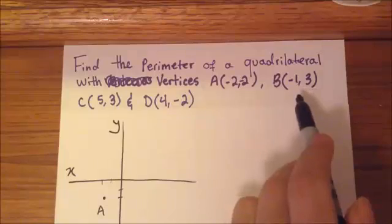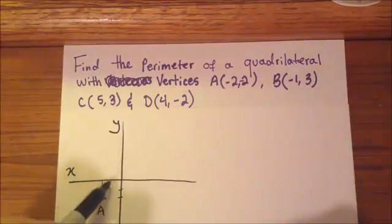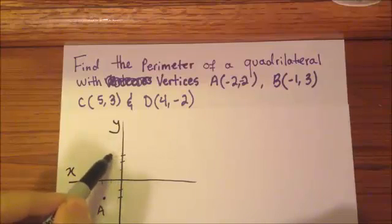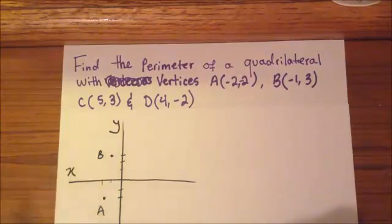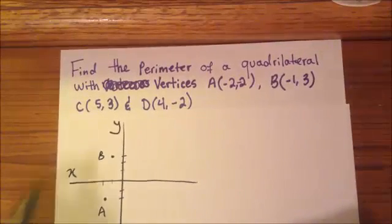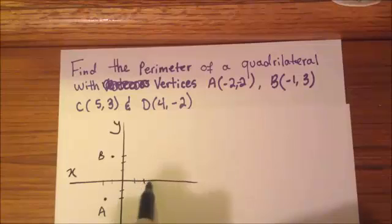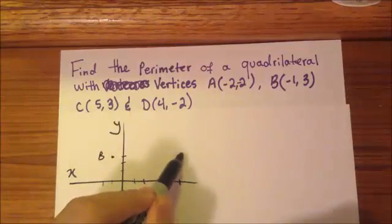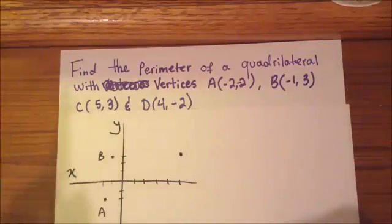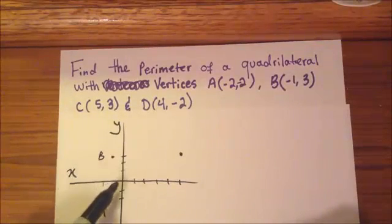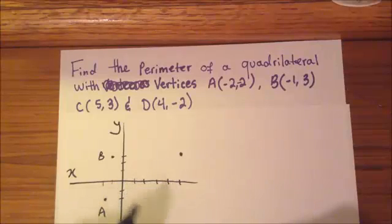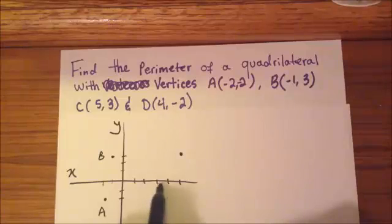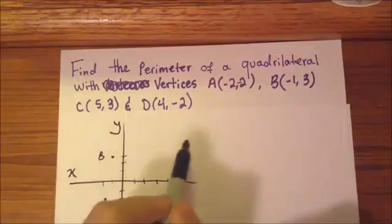My point B is sitting at negative 1 and 3, so negative 1, then up 1, 2, 3. This is point B. Point C is sitting at 5 and 3, so 1, 2, 3, 4, 5, and then up 1, 2, 3 — right there. And my last point, point D, is sitting at 4 and negative 2.